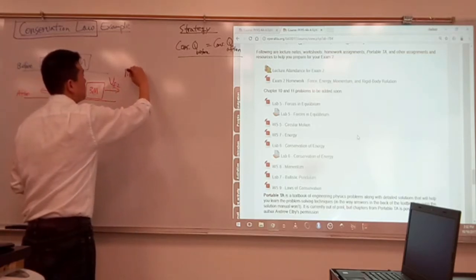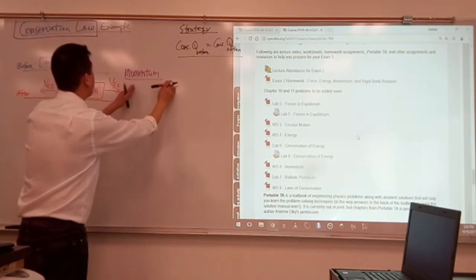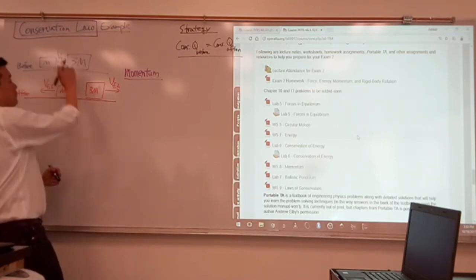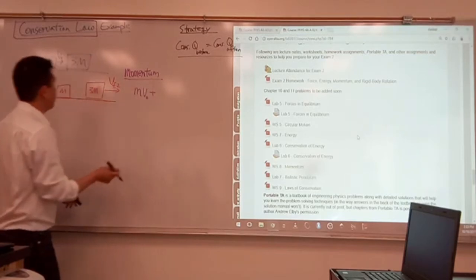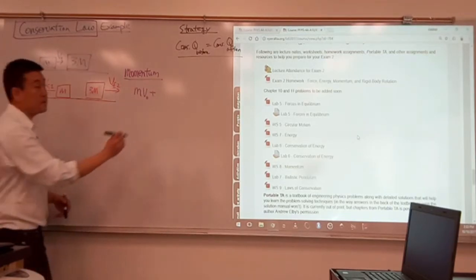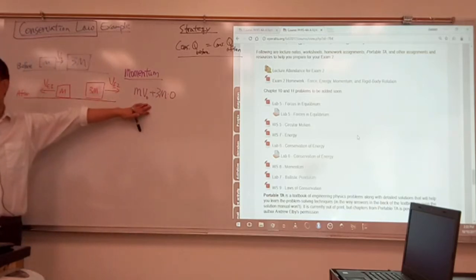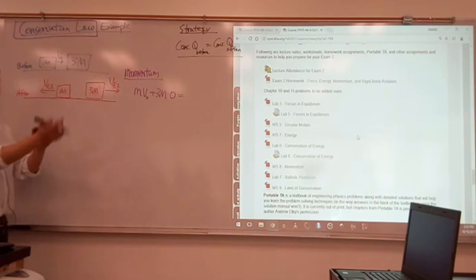So for momentum, what I'm saying is, all right, momentum is a conserved quantity. So I can say that the net momentum before the collision is equal to net momentum after the collision. Let me write it down. So net momentum before the collision will be mass times velocity, mv naught, plus mass times velocity. So it'll be 3m times zero, that's the momentum before the collision.